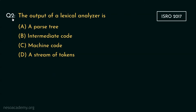Coming to the next question: the output of the lexical analyzer is — we need to find the output of the lexer from four options. Consider the first option: parse-tree. Well, it cannot be correct since parse-tree is the output of the parser or syntax analyzer. The same can be stated for intermediate code as well — in the session on different phases of compiler, we observed that it is the outcome of the intermediate code generation phase.